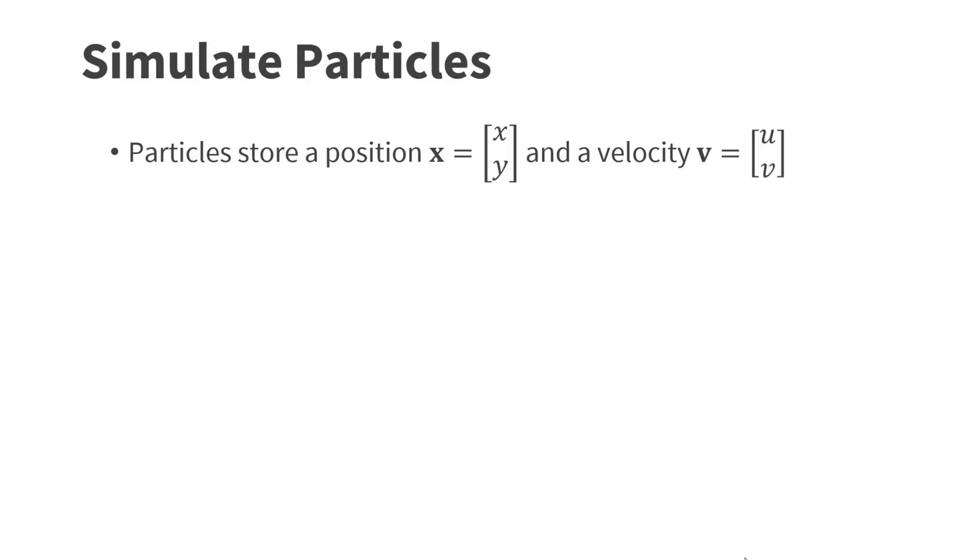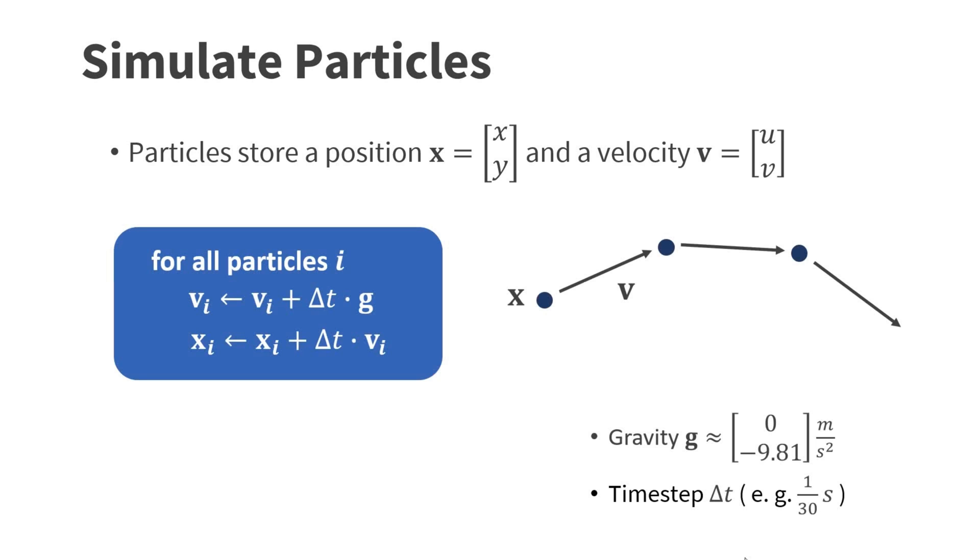Let me now explain all the steps in more detail. The particle simulation step is very simple. Particles store a position X as well as a velocity V. In a two-dimensional simulation, both have two components, XY and UV respectively. As usual, I use boldface for vectors. To simulate the particles, we iterate through all of them. First, we add gravity times the time step size to the velocities. Then, we add the velocity times the time step size to the positions. This method is called semi-implicit Euler integration. It produces the ballistic motion of unconstrained particles. At the end of this step, we also need to push particles out of obstacles if necessary.